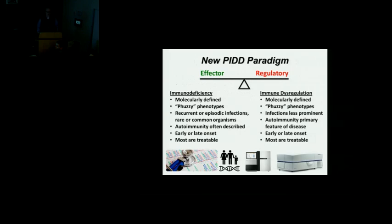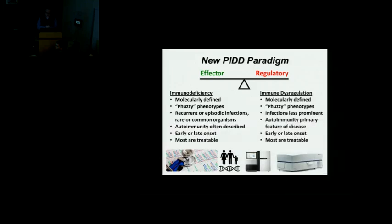Compare that to the paradigm today. There are really two arms of the immune system where we see defects: the effector arm, which attacks and prevents infection, and the regulatory arm, which keeps everything in check and maintains immune tolerance. We now know of disorders in both arms. The ones I'll focus on today are the immune dysregulation disorders — primarily the regulatory ones. On the immunodeficiency side, these are now becoming largely molecularly defined, and we're approaching 40 to 50 percent of patients receiving a molecular diagnosis.